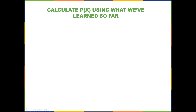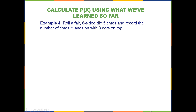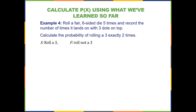We'll calculate the probability when we roll a fair six-sided die five times and record the number of times it lands with three dots on top. We're going to use what we've learned so far to calculate the probability of rolling a three exactly two times. A success would be rolling a three; a failure would be not rolling a three. Lowercase p represents the probability of success in a single trial, which equals one side out of six sides — so p = 1/6.